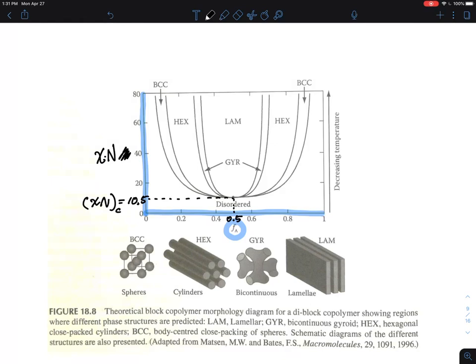At the symmetric condition where they are most likely to phase separate, the chi N value for the diblock copolymer has to be 10.5. This is for diblock only; triblock requires a higher chi N value for phase separation or order structure formation.